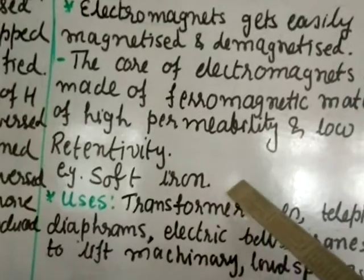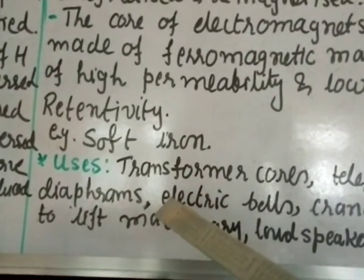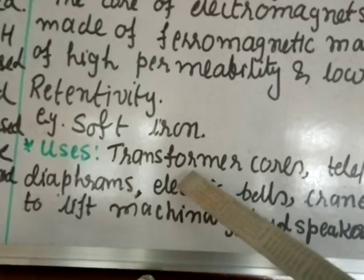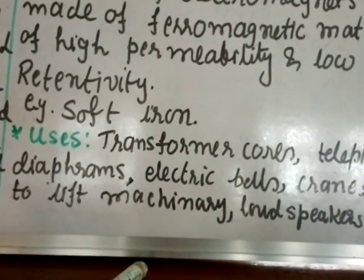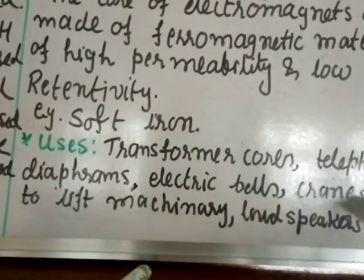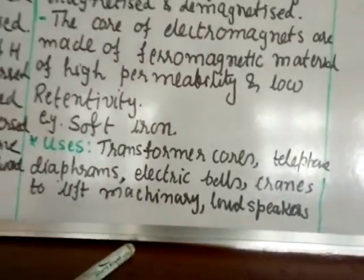The example is soft iron. The uses: it is used in transformer cores, telephone diaphragms, electric bells, cranes to lift machineries, loudspeakers.